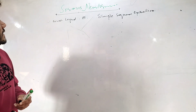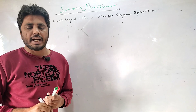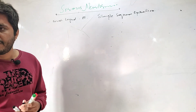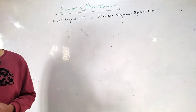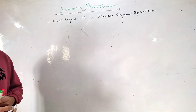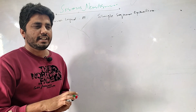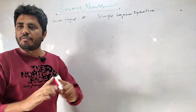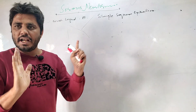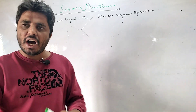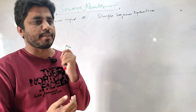To understand serous membrane properly, you must have knowledge of body cavities, because that is where you will find serous membrane. Serous membrane actually produces a fluid which is called serous fluid. Serous membrane actually does two things: number one, they line the wall of the body cavity, and also the organs which are in that body cavity are also covered by serous membrane.